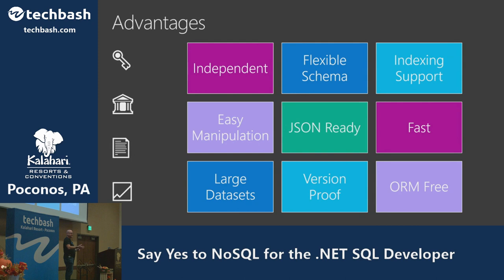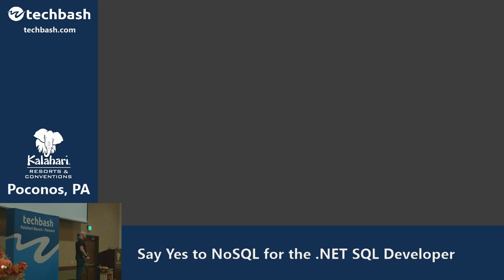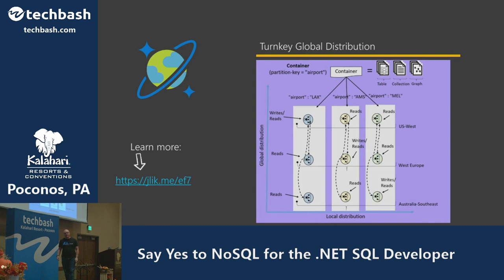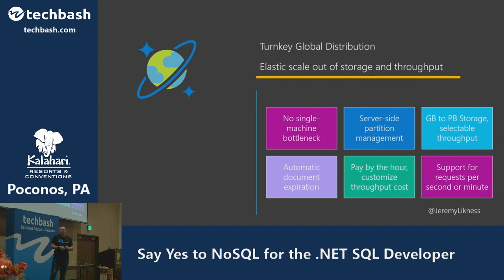They're also ORM-free — you can use an ORM with Cosmos DB, Entity Framework just came out with an adapter, but you don't have to. The native drivers will deliver you documents ready to work with. You get turnkey global distribution: I provide rules to partition data into logical containers, and when I make a change it automatically replicates across the globe. I don't have to explicitly configure sharding — I just tell it which property determines partitioning, and it fans that out. Even in a single region, I'm provisioning a cluster for failover.